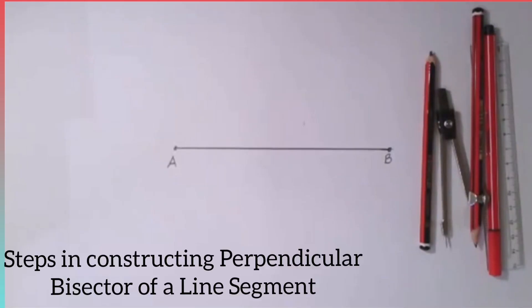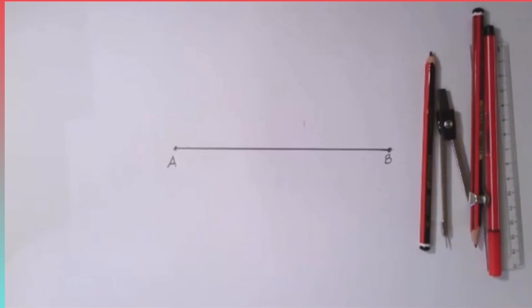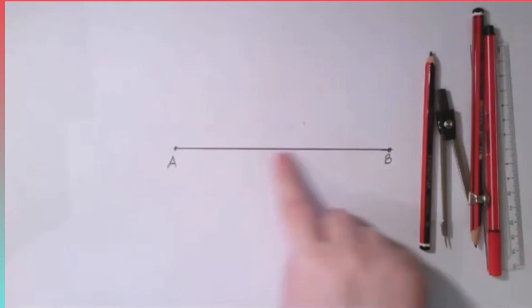We are going to construct a perpendicular bisector of a line segment using only a compass and a straight edge. In this example we are going to construct the perpendicular bisector of the line AB.